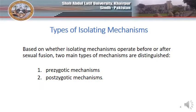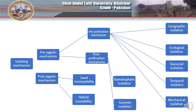These isolating mechanisms can be categorized into two groups: pre-zygotic mechanisms and post-zygotic mechanisms, based on whether they operate before or after the formation of the zygote. In pre-zygotic mechanisms, the isolating barriers may operate before or after pollination. Barriers before pollination include geographic, ecological, seasonal, temporal, and mechanical, whereas after pollination it may be gametophytic or gametic isolation. If pollination occurs and a zygote is formed, post-pollination mechanisms include seed incapability and hybrid inviability.